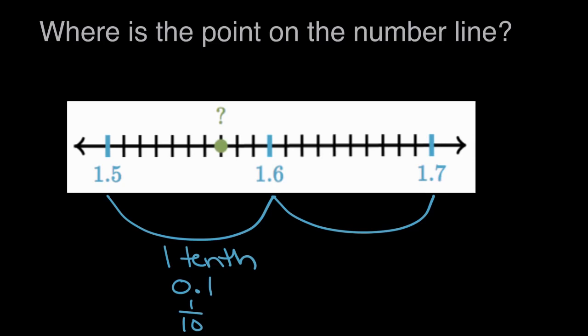But we want to know what is this green point right here, so to figure that out, we also need to figure out what do these black tick marks represent, these smaller distances.